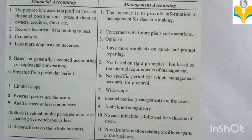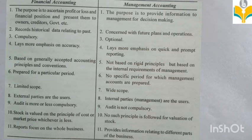Sixth: financial accounting is prepared for a particular period, while there is no specific period for which management accounts are prepared. Seventh: financial accounting has only limited scope, while management accounting has a wide scope. Eighth: external parties are the users of financial accounting, while internal parties are the users of management accounting.